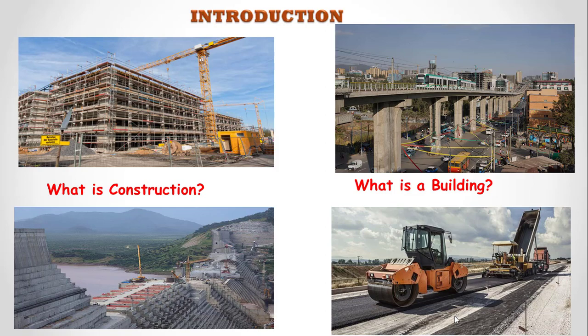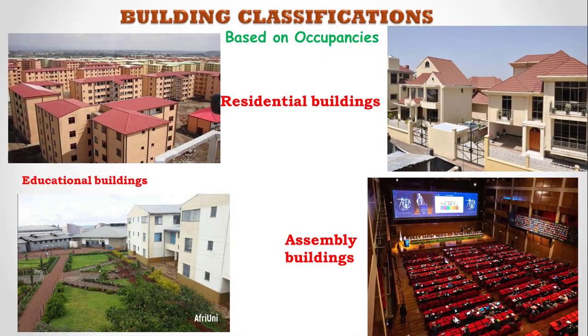Generally, buildings provide living space which also gives privacy. We can also use buildings for storage. Now let's look at building classification. The first classification is based on occupancy. We have residential buildings — as the name indicates, these are occupied by persons for living, like private residences, apartments, and dormitories.